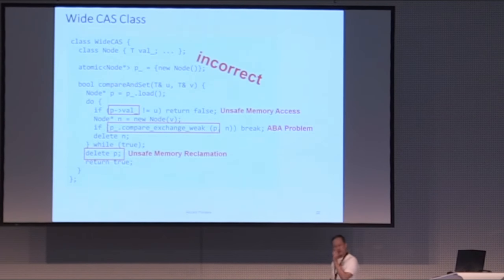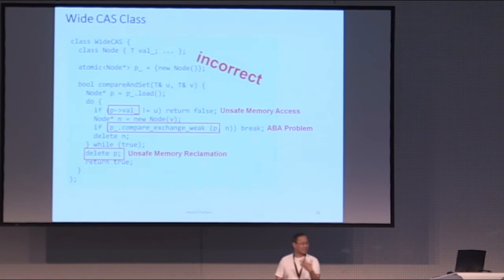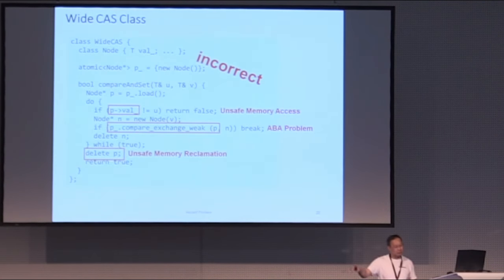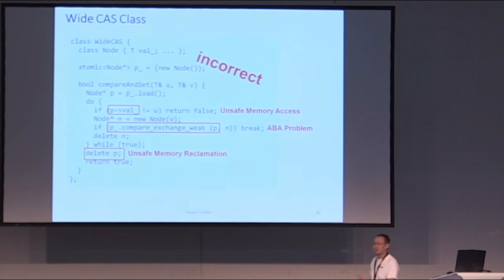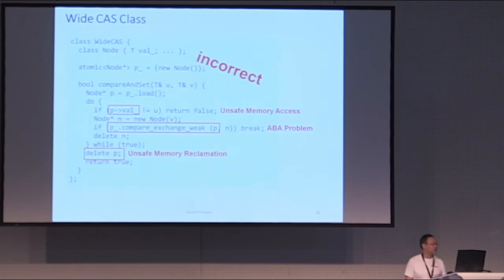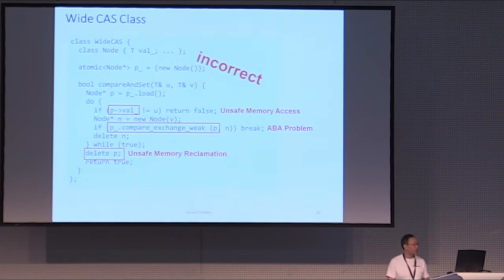ABA means a value used to be A, switched to B when you weren't looking, switched back to A, and when you check, it looks like A — but it's not the A you put in. The unsafe memory reclamation is one of the major computer science problems we are trying to tackle. It turns out to be the most difficult to solve. If you just call delete on a pointer, you're reclaiming without knowing if other threads have references to that block.